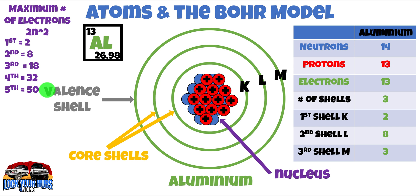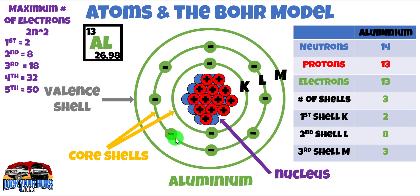Now we've sussed that out, let's start arranging electrons in our aluminium atom. Our first shell K has two electrons. Our next core shell L has eight electrons — the maximum number. Two and eight is 10. We have 13 electrons in the aluminium atom, so that leaves us with three electrons in our valence shell. The valence shell is the most important shell when it comes to working out electrical properties of that particular element, in this case aluminium.